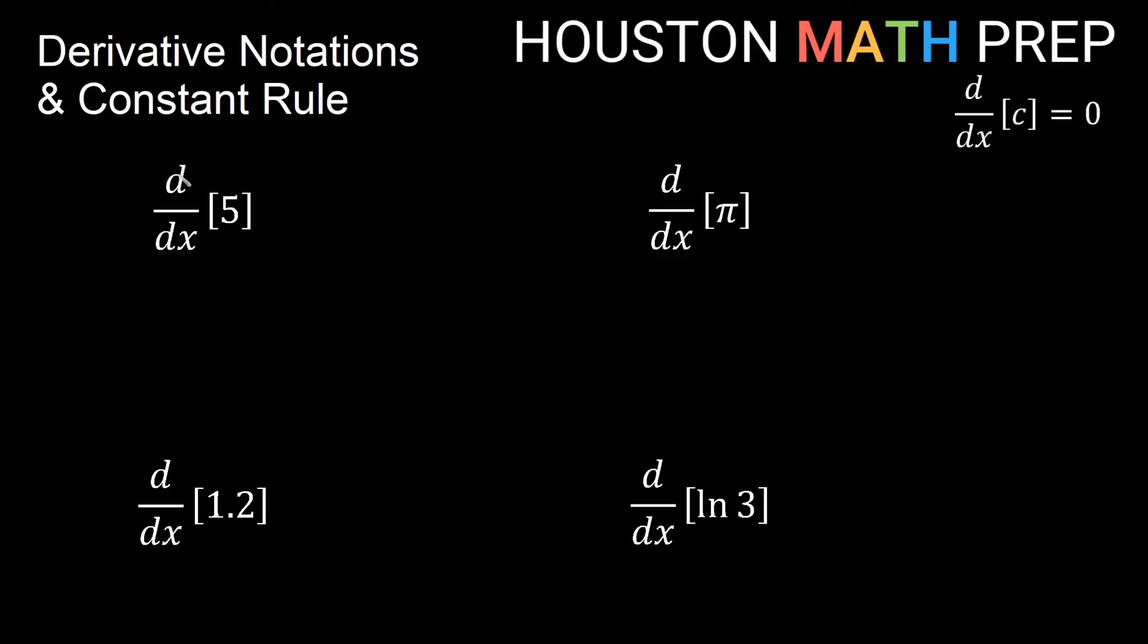Let's take a look at some examples here. The derivative with respect to x of 5 is indeed 0 because 5 is a constant. The derivative with respect to x of 1.2 is also 0. 1.2 is a constant, right? There's no variable in there. The derivative with respect to x of π, that is also 0. π is a constant, right? It's just a number. The derivative with respect to x of ln 3. ln 3 is just some number. It's just a constant.